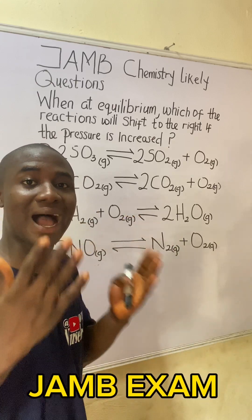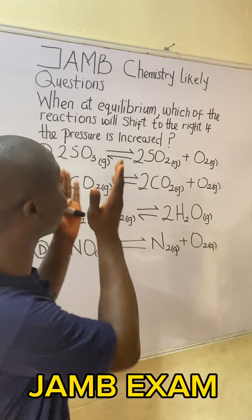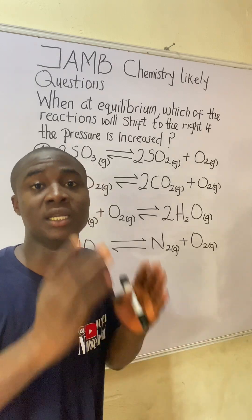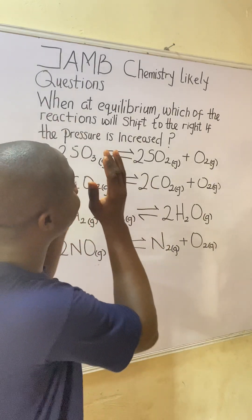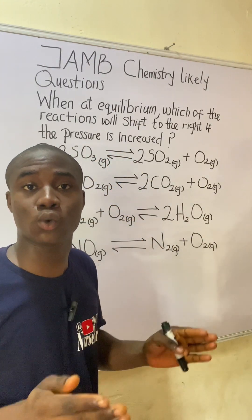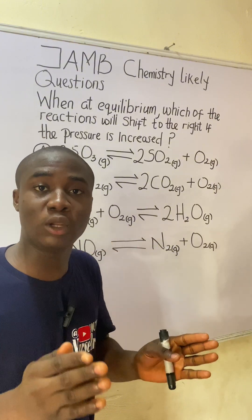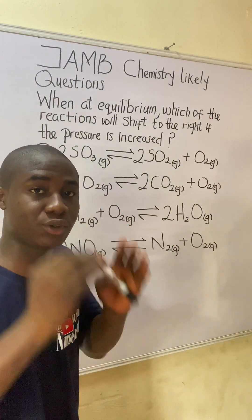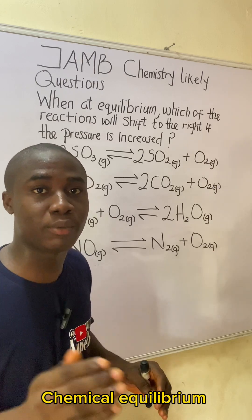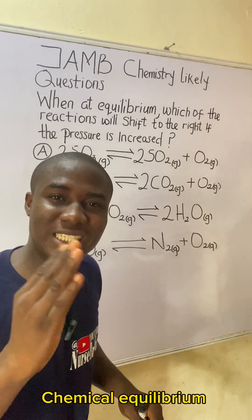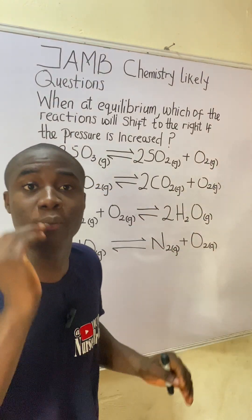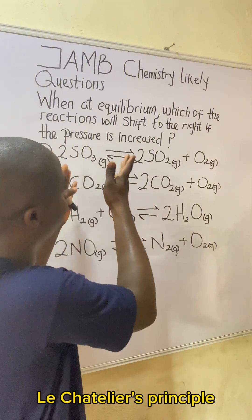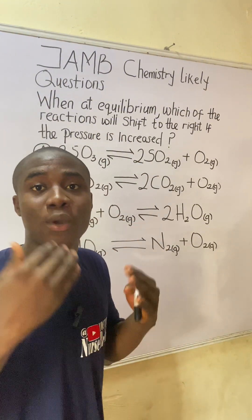You are writing the JAM exam and you came across this question — how will you solve it? It's actually very easy. First of all, we have to know the topic to which this question belongs. From the look of things, this particular question is from the topic in chemistry called chemical equilibrium, specifically applying the knowledge of a principle called Le Chatelier's Principle to solve this question.